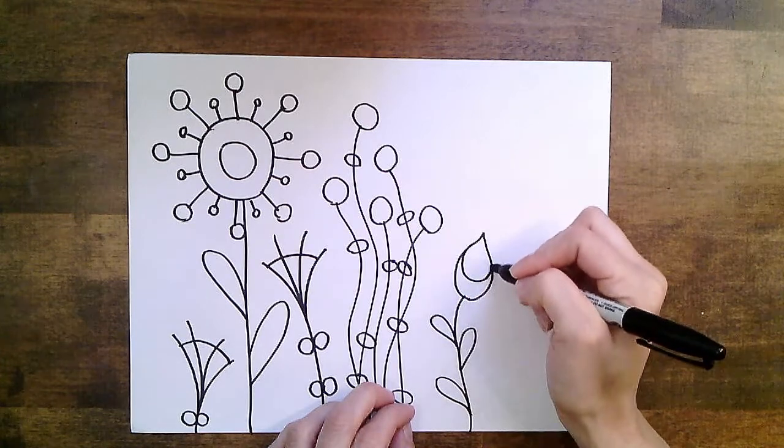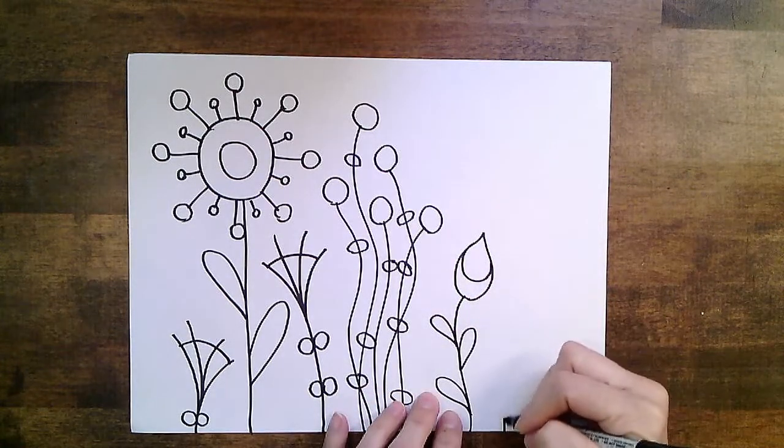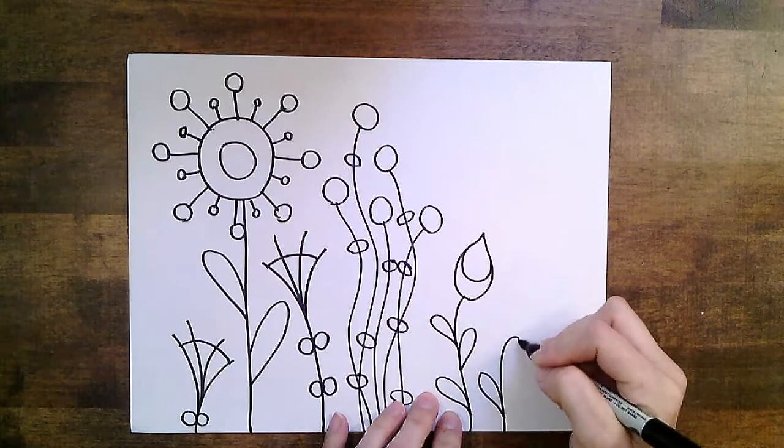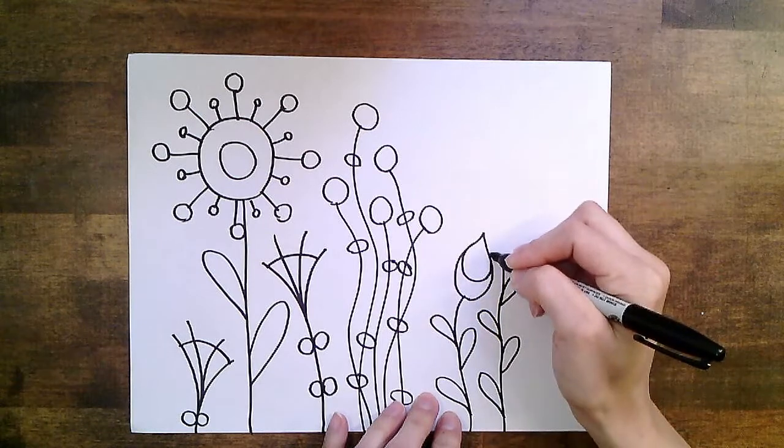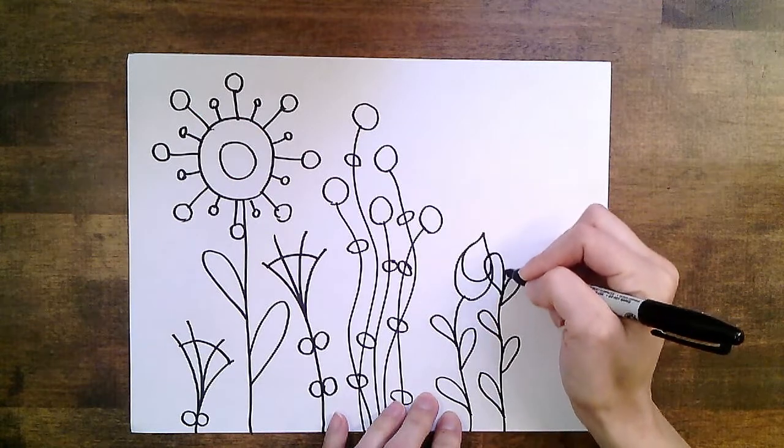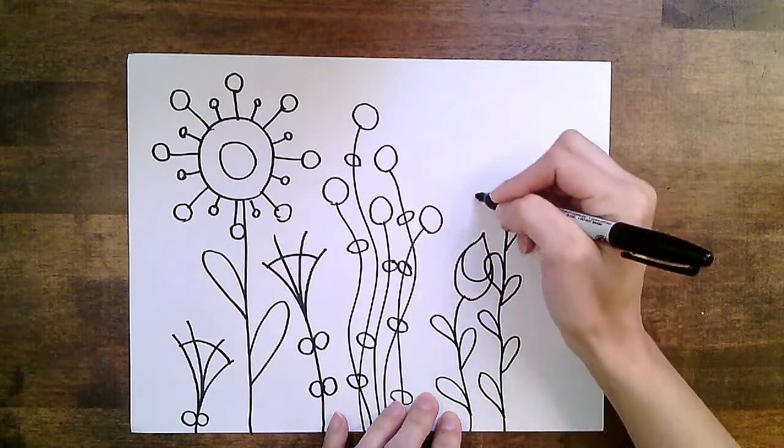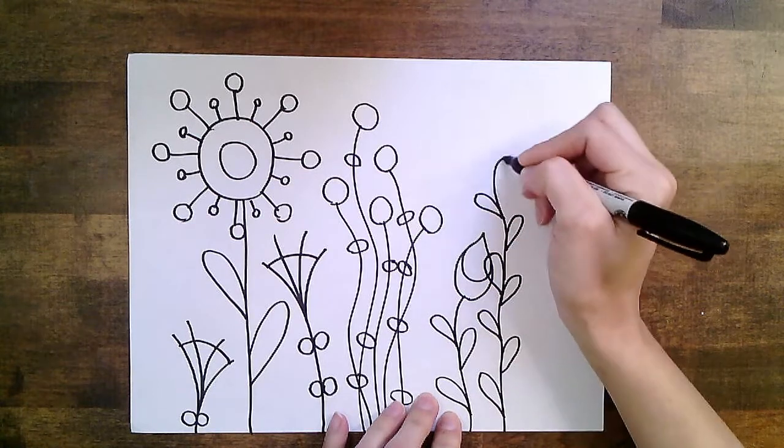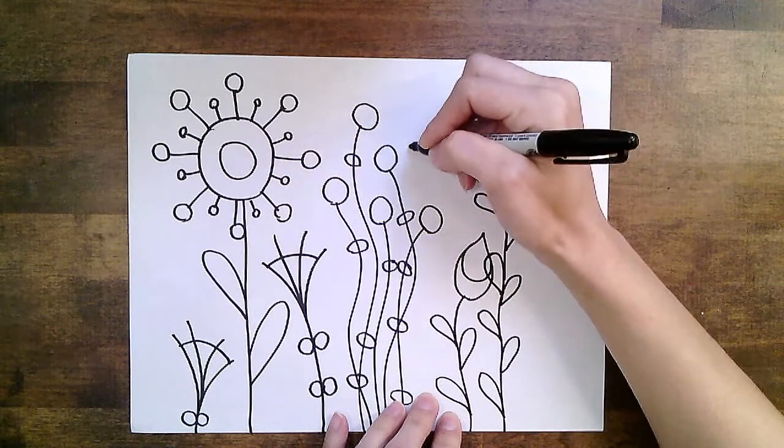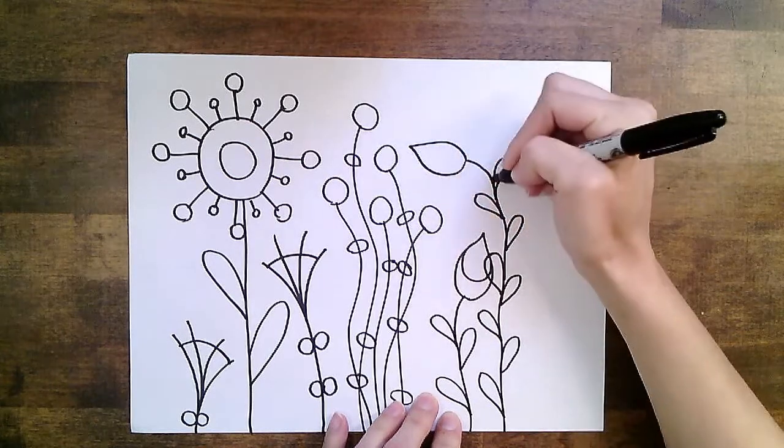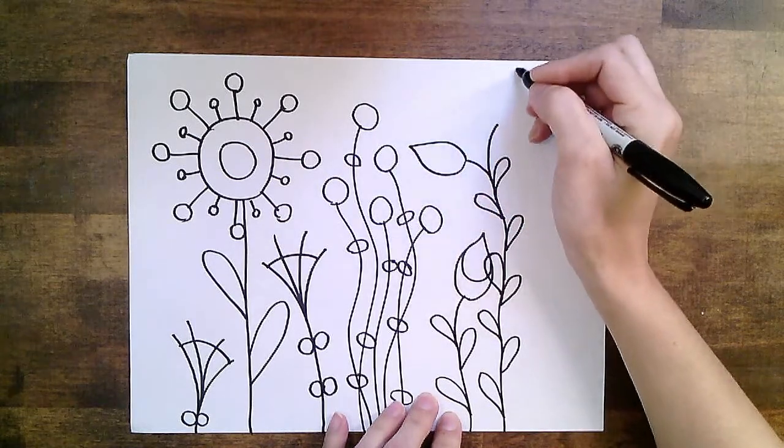I'll make another one. Make it taller. See if I can get up into that empty space that I have. Ooh, I ran into my flower. I'll just overlap it. That's fine. I think I'll branch it off and make a couple other teardrop flowers.